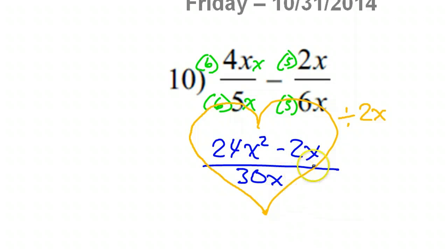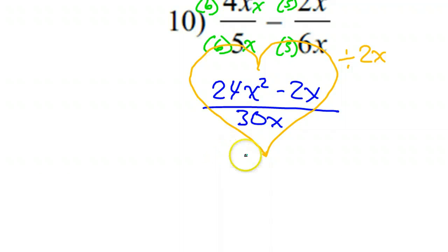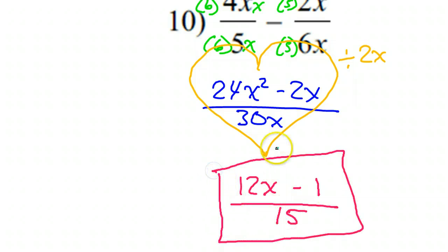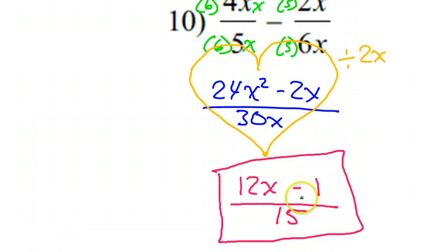They're all divisible by 2, and they all have an x. So dividing by 2 is obvious. Dividing by x will leave each term with one less x than it has now. So the answer will be 12x minus 1. 2x divided by 2x — anything divided by itself is going to be 1. 2 divided by 2 is 1, over 15. Notice each term has one less x than it had before: 2x becomes 1, 1x becomes none, 1x becomes none. And of course these are all divided by 2. Notice that you cannot divide these by 3 — it's all three terms or nothing.